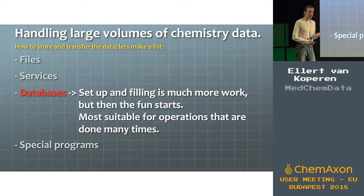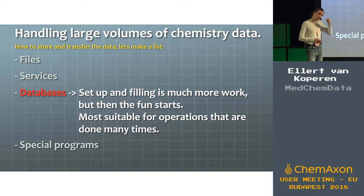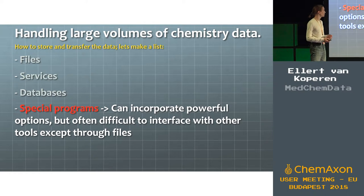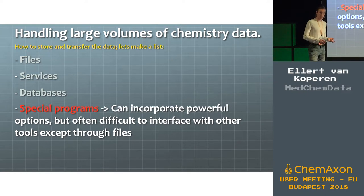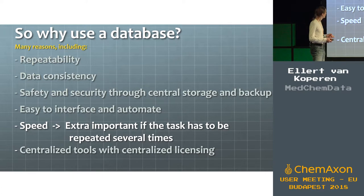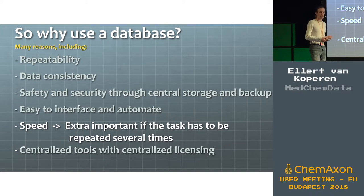Then there are databases. Setting up a database with lots of chemistry information can be quite a daunting task, but once it runs, the fun starts — because databases outperform all the other options quite significantly. And special programs can be really powerful; there are computational programs with internal storage formats that can do amazing things, but they are usually very difficult to interface with other tools. Why use a database? As a pure computer nerd, I'm mainly interested in getting things quick, responsive, and repeatable and consistent — so you can do experiments with the software itself, try things, and if it doesn't work, change something and try again. The focus is speed. Always speed.